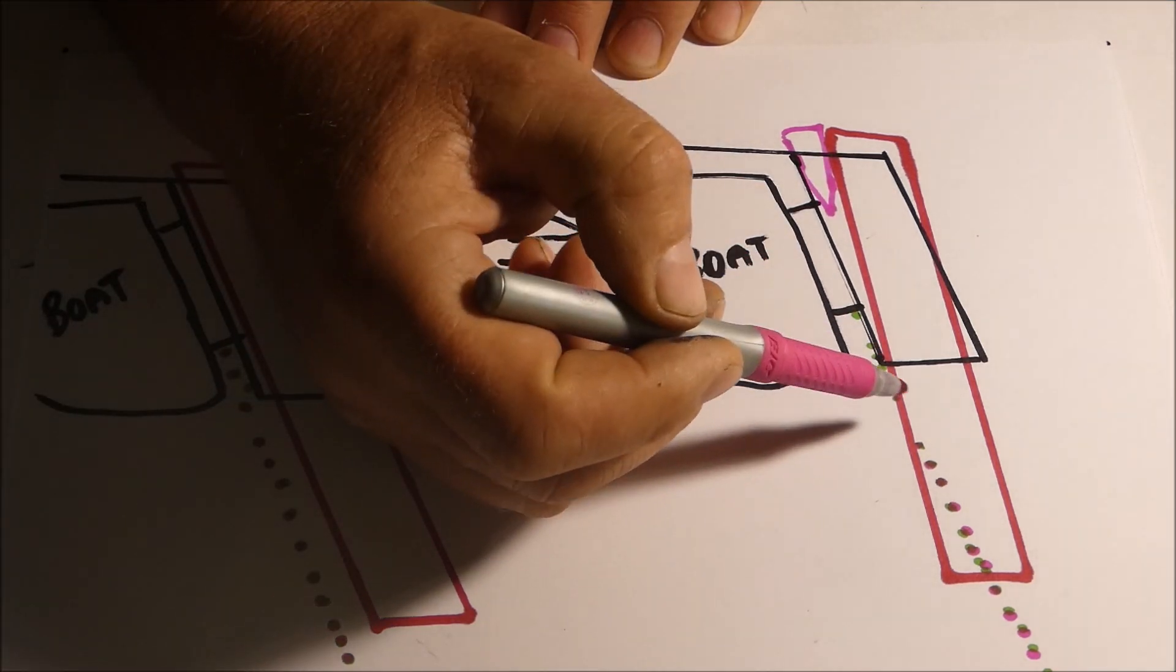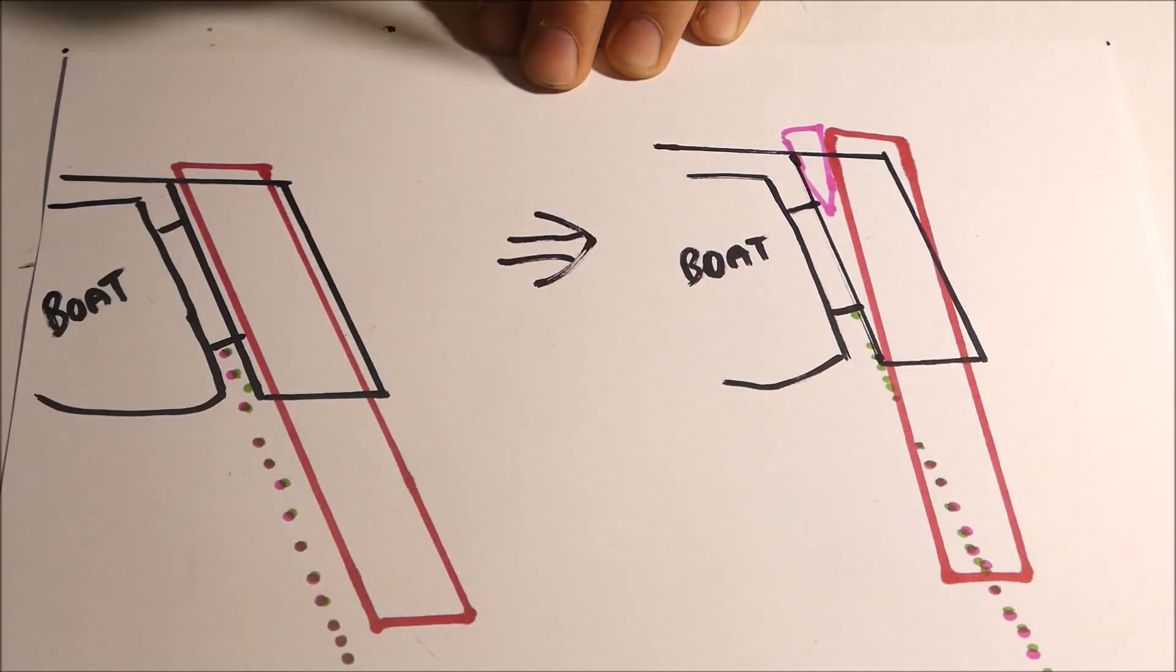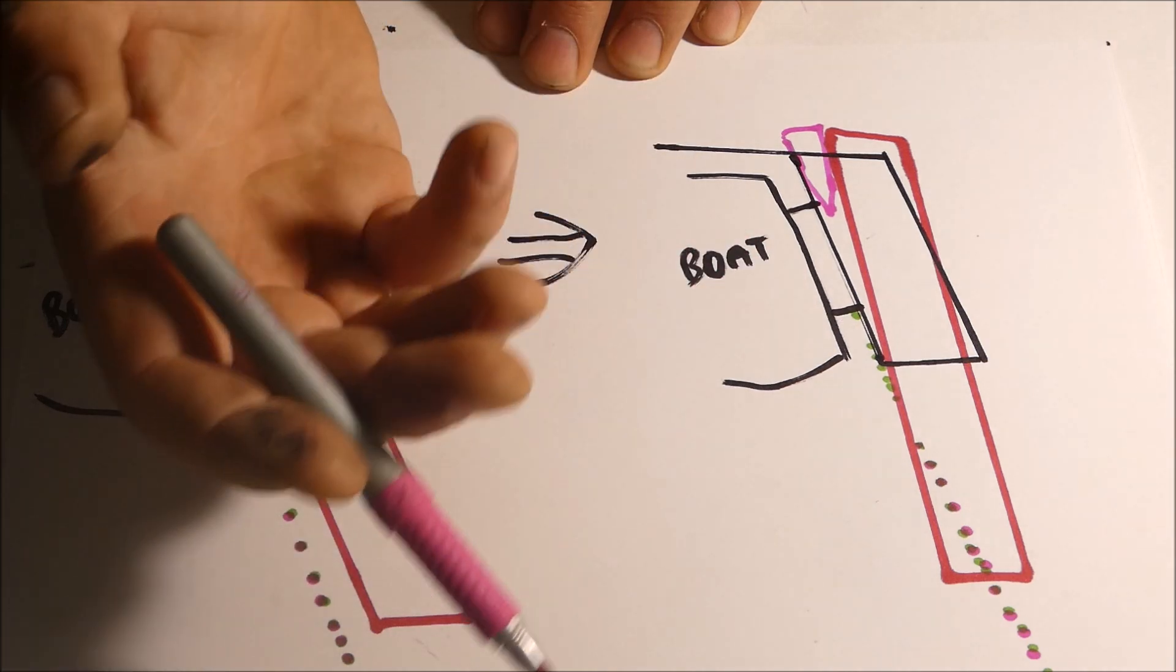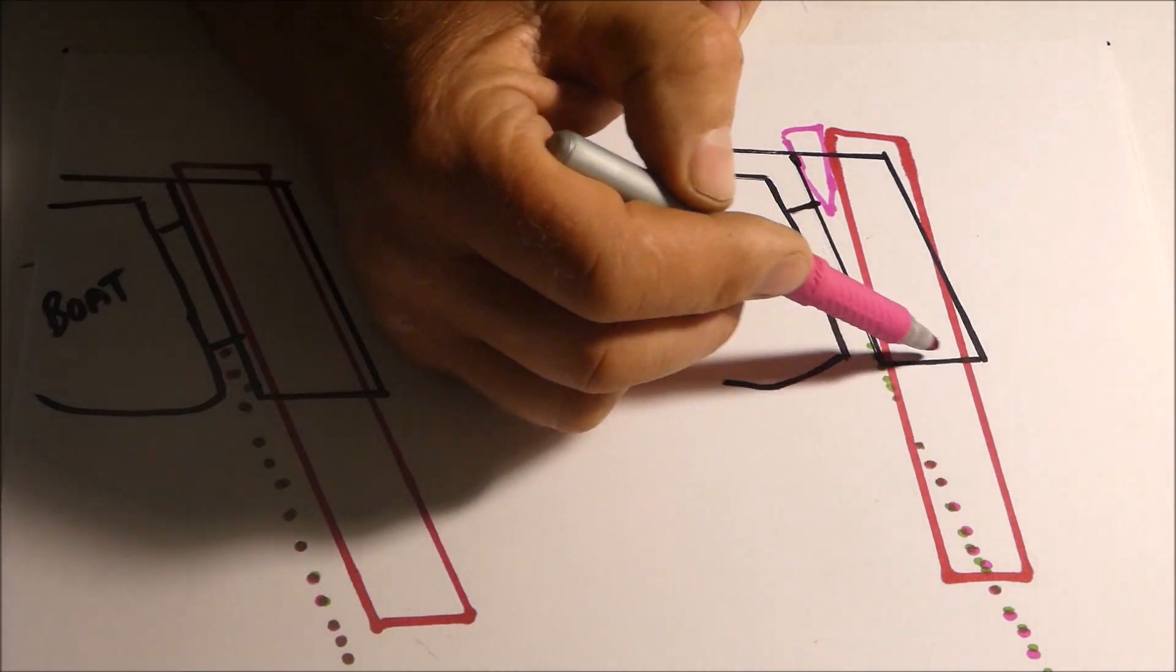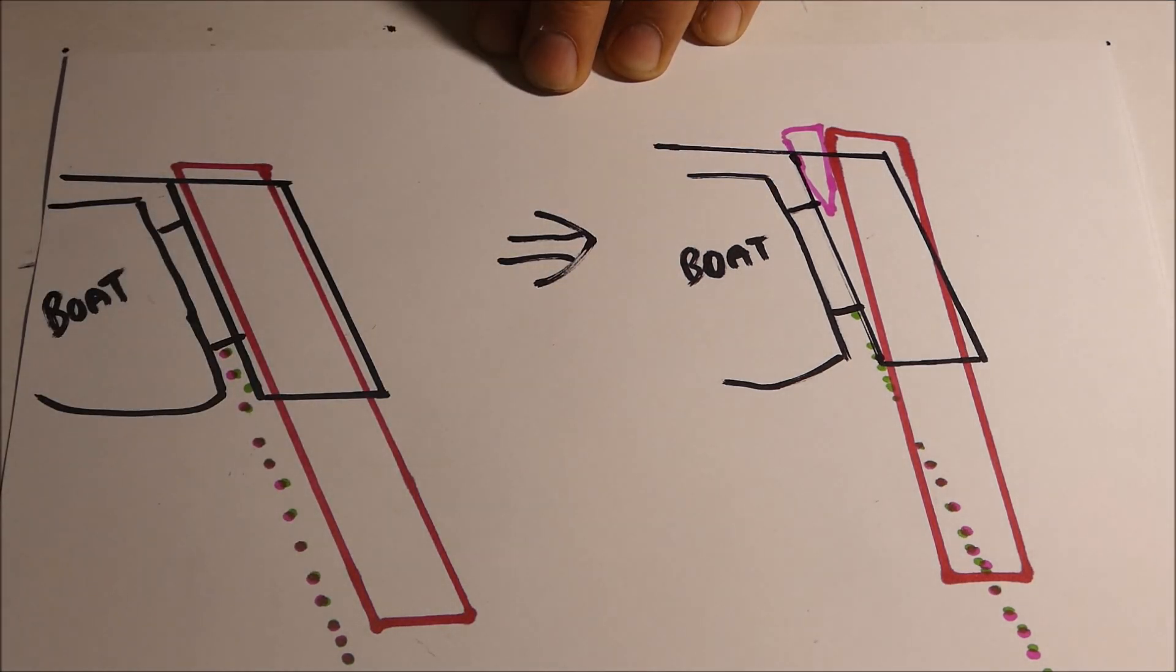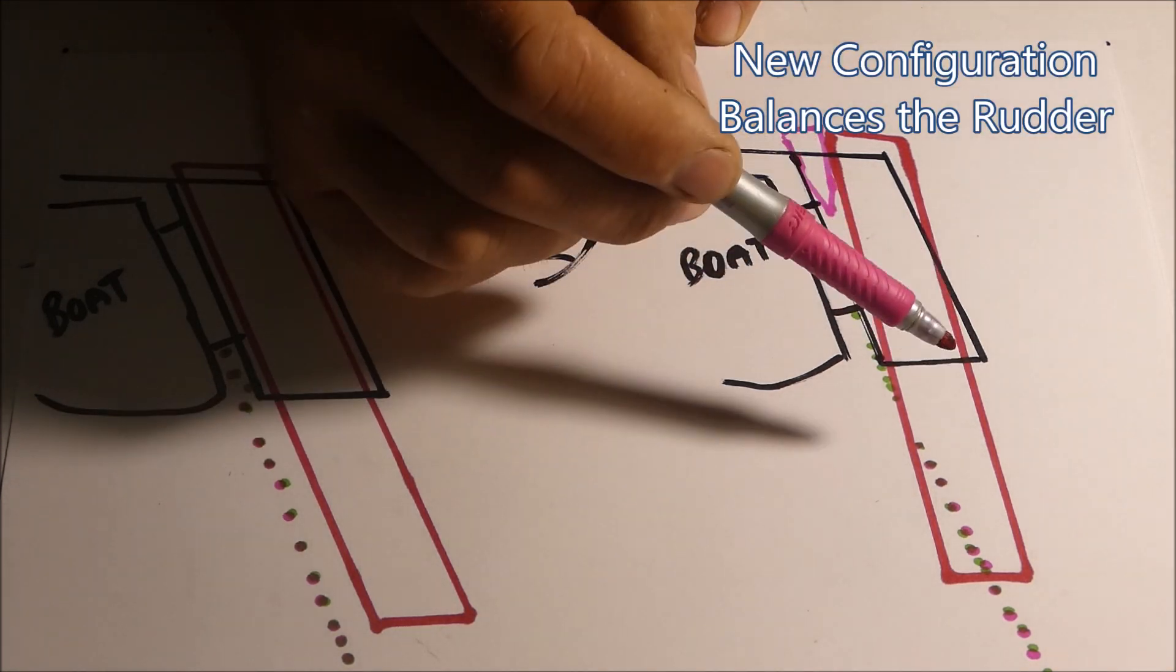Now if you go along this dotted line, which is the line of pintle rotation, it now cuts through the bottom corner of the rudder, meaning this section of rudder is helping you to turn the rudder, this section of rudder is resisting you to turn the rudder. And if you subtract the one from the other, you actually get a lighter tiller pressure. So this rudder is actually balanced in the correct manner.